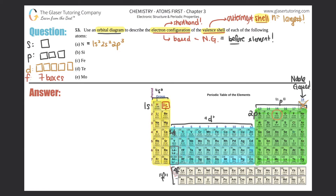The valence shell is the highest n number. For nitrogen, you have 2s² and 2p³. The 1s² is a core electron — it's not toward the outside. So for part a, nitrogen, you just take 2s and 2p. Draw one box for the s and three boxes for the p. For the 2s, there are two electrons: one up and one down, opposite each other because of the ms value.